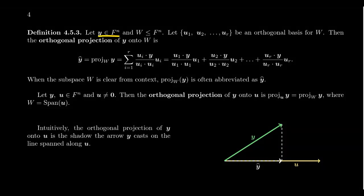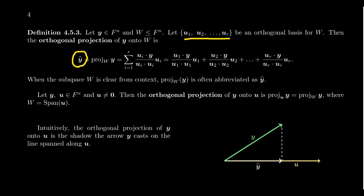Suppose we have a vector y that lives inside our vector space F^n for some field F, and we have a subspace W inside of F^n. Consider the orthogonal basis u1, u2, up to ur for W. We say that the orthogonal projection of y onto W is given by proj_W(y). We're projecting the vector y onto the subspace W, and when W is clear from context we abbreviate this as y-hat. The definition of y-hat is a linear combination of the basis vectors u1 through ur, which belongs to W.